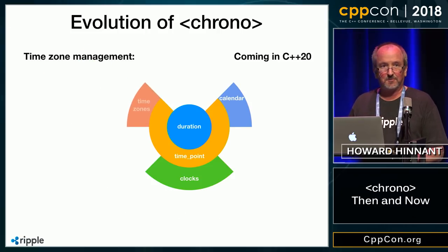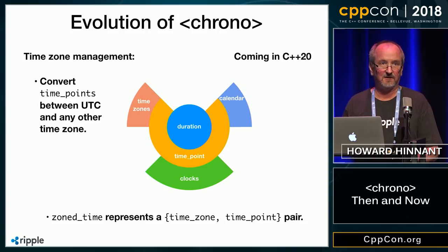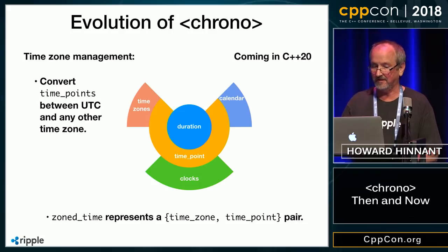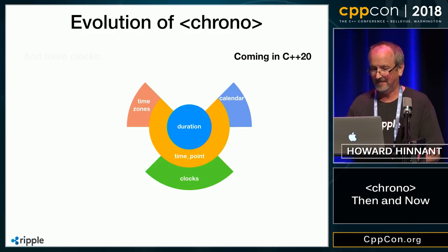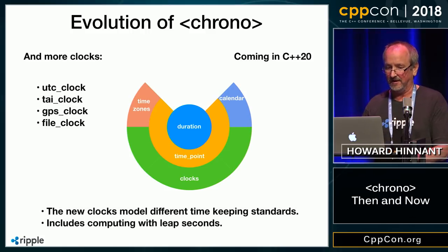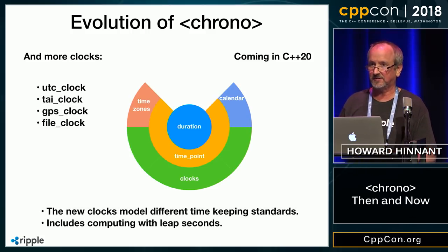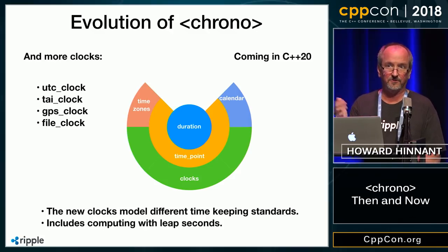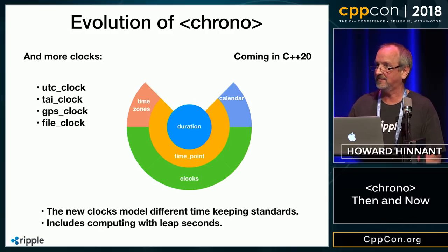Also coming in C++20, there will be time zones, and that'll allow you to convert between UTC and any other time zone — really between any two time zones on the planet, not just between your computer's local time zone and UTC, but literally any time zone. There'll be a new type called zone time, which represents a time zone and a time point pair. And there'll be a bunch more clocks: a UTC clock that'll deal with leap seconds, a TAI clock for dealing with the TAI time standard, a GPS clock, and a file clock for the new file system.